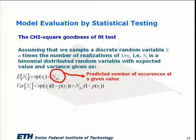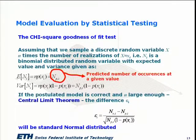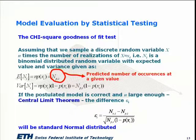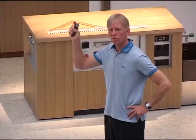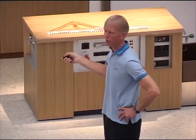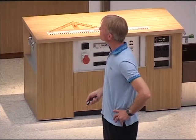If the postulated model is correct and n is large enough, then the difference between the predicted and the observed, normalized by subtracting the mean and dividing by the standard deviation, turns out to be standard normally distributed. This is a plausible assumption due to the central limit theorem — all these small deviations turn out to be standard normally distributed when we standardize them.